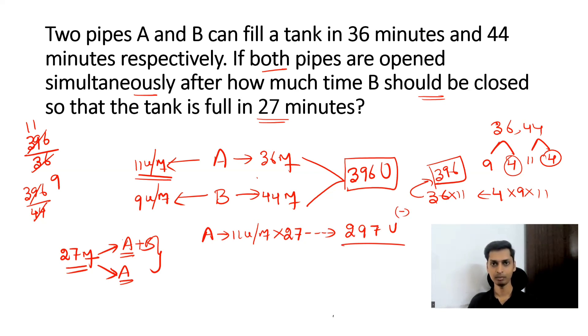Now out of 396, pipe A filled 297 units. So remaining we have 99 units. Now this is the work carried out by pipe B. Because pipe A's work is 297 units out of 396 units. Now pipe B have completed this 99 units.